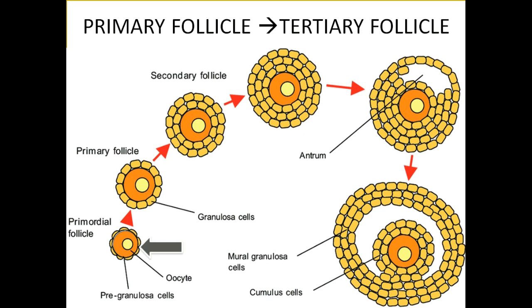In the center of the primordial follicle is a primary oocyte. The primordial follicle becomes a primary follicle as granulosa cells change their shape from flat to cuboidal cells. Then the primary follicle differentiates into a secondary follicle — the difference being that granulosa cells have now increased in number, continuing to increase.